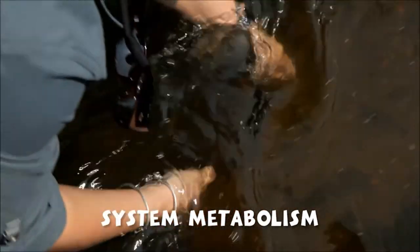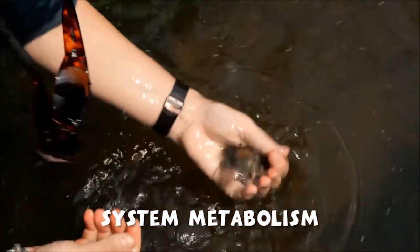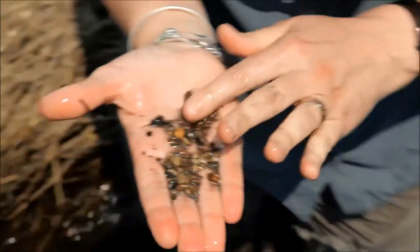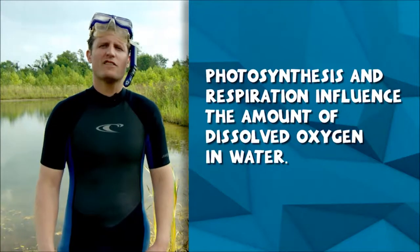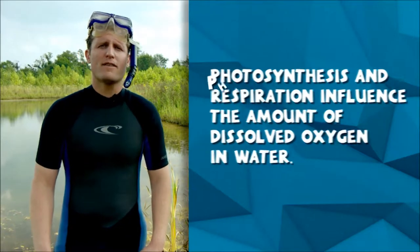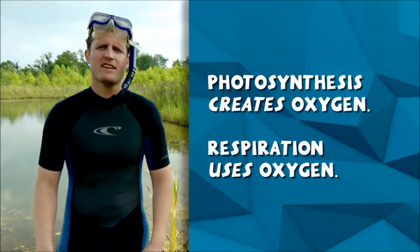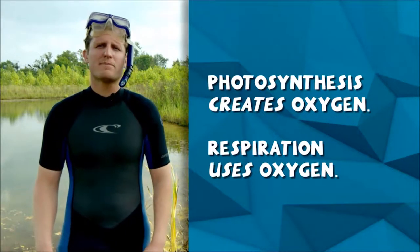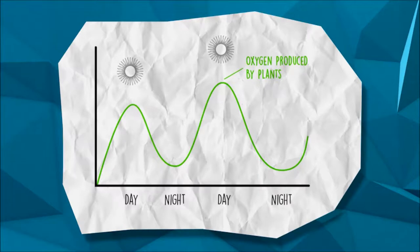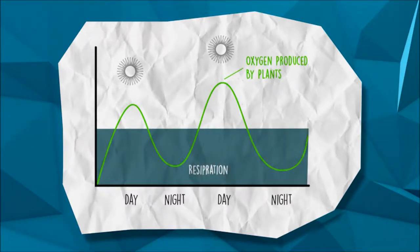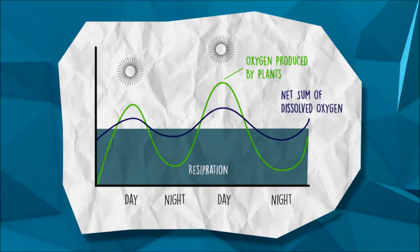By measuring the metabolism of the water body, ecologists are able to better understand how the system is functioning as a whole — a snapshot of the well-being of all the organisms contained within it. Both respiration and photosynthesis influence the amount of dissolved oxygen gas in water. Photosynthesis produces oxygen and respiration uses oxygen, so the oxygen we measure in the water reflects the balance of these two processes. If we look at a graph of oxygen produced by plants, we see it peaks during the day and decreases at night. Respiration, on the other hand, stays relatively constant throughout the day because living organisms are constantly respiring. If we take the sum of these two and look at how oxygen levels change over time, we can see that the level of oxygen increases and decreases in a diel, or daily, pattern.